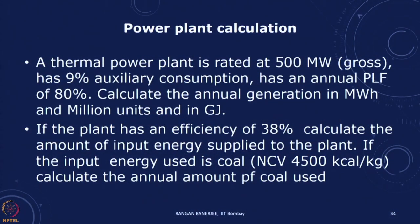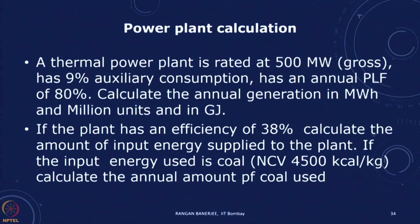Let us do a simple calculation. If we look at a thermal power plant rated at 500 megawatt gross, it has 9 percent auxiliary consumption and has an annual PLF of 80 percent. We want to calculate the annual generation in megawatt hours, in million units, and in gigajoules. The next part of the question: if the plant has an efficiency of 38 percent, calculate the input energy supplied to the plant — in megajoules, petajoules, terajoules. And if the input energy used is coal, calculate the amount of coal used.